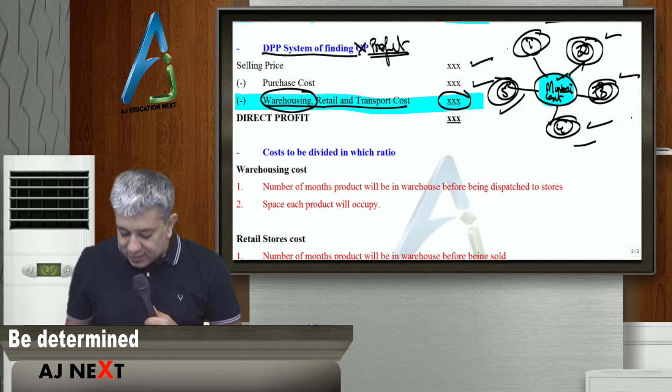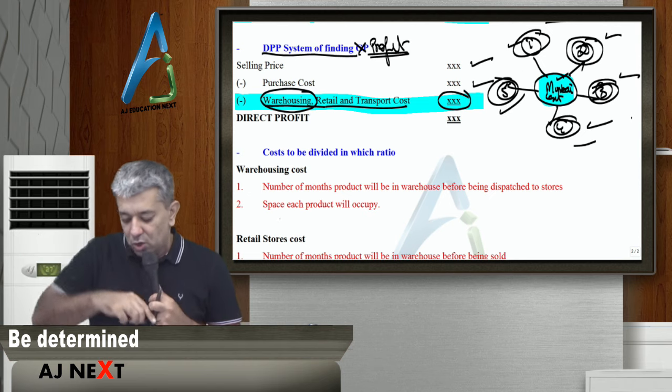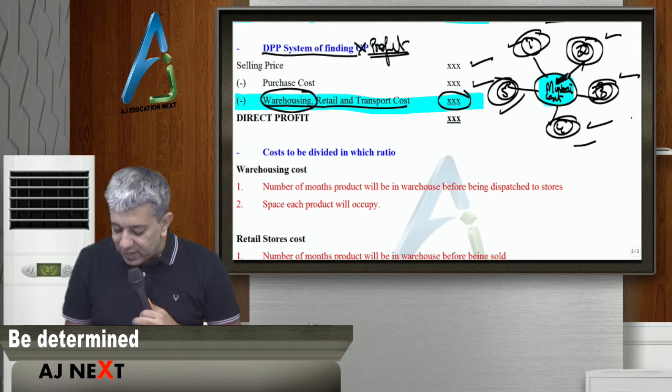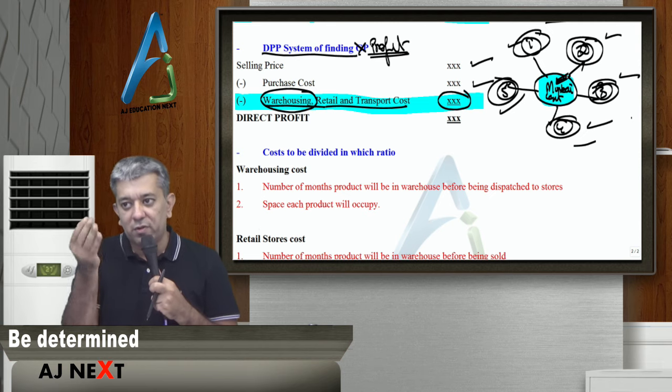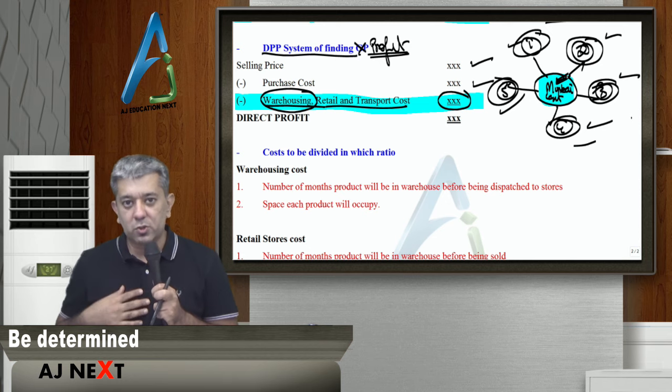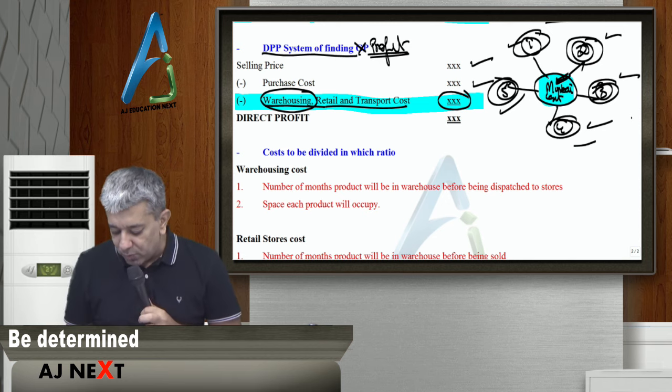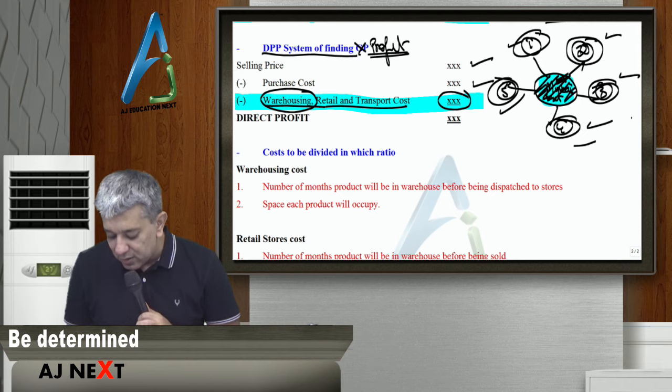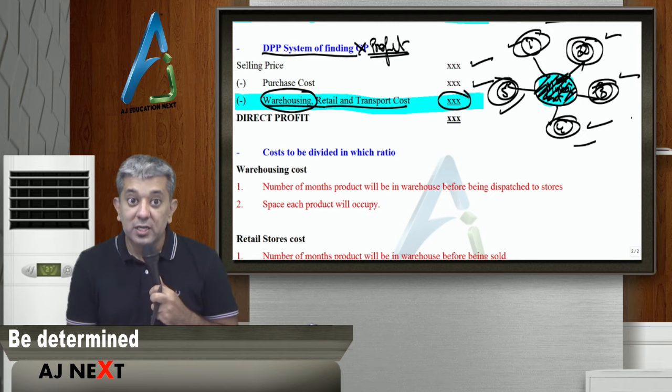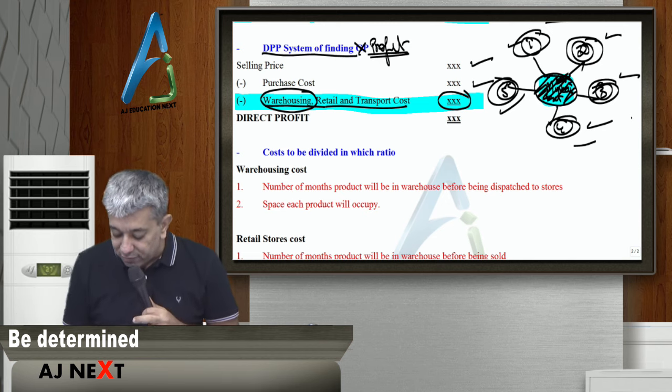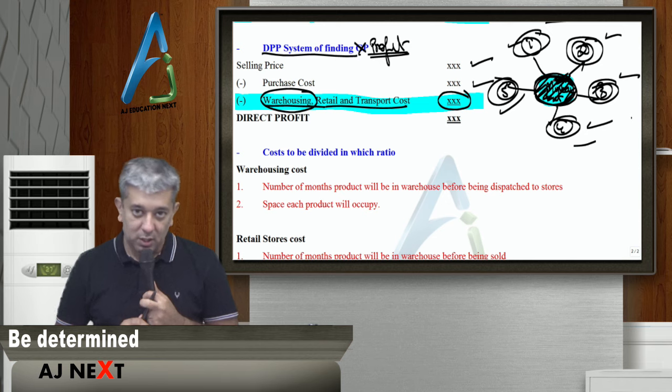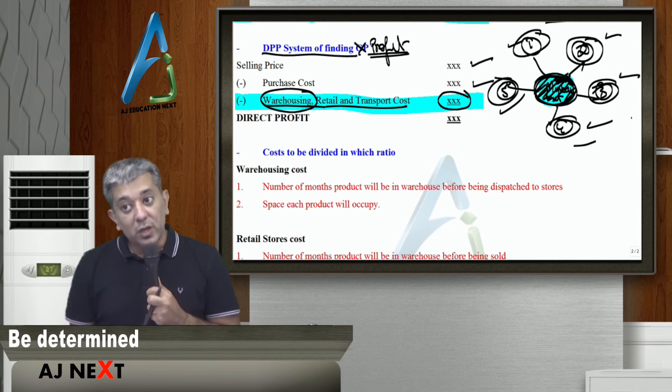Jab bhi koi sales outlet ka stock kam ho jata hai, woh log, central warehouse ko na phone karte hai, aur bolta hai, ki bhai, hamara stock abhi khatam hone wala hai, aap log new stock bhej do. Toh zara socho, koi bhi product aayega, woh pehle thode din tak yaha par rahega. Jo product zyada der tak yaha par rahega, it should get more amount of warehousing cost. Thik hai, that is one thing. Toh woh ek cost, usko zyada hi charge hona chahiye, woh wali cost, hum log ignore kaise kar sakte hai, woh bhi toh cost hai.